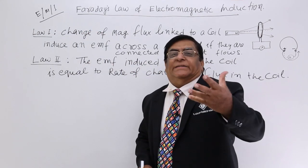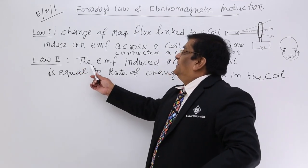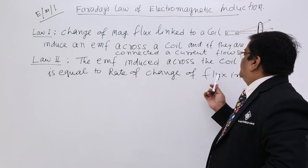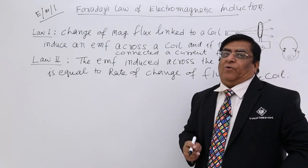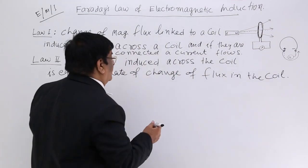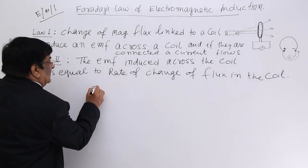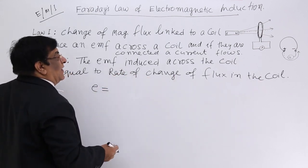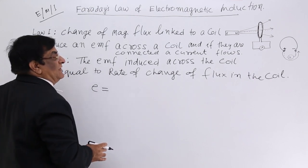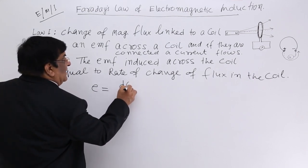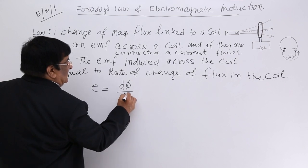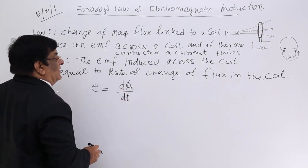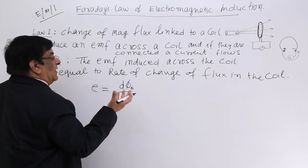Law two tells us how much. How much EMF is induced? It says the EMF induced across the coil is equal to rate of change of flux in the coil. So, what is EMF induced? Let us say it is E, EMF induced. This is equal to rate of change of flux. In mathematics, we write it as dφ/dt. Rate of change with respect to time. So, E = dφ/dt and these two are equal.